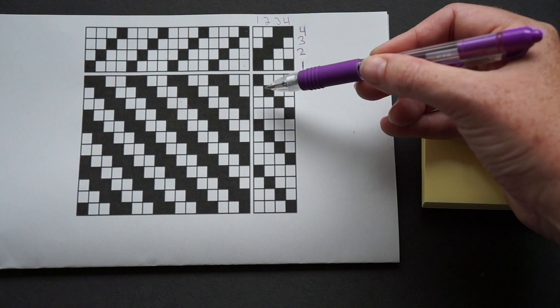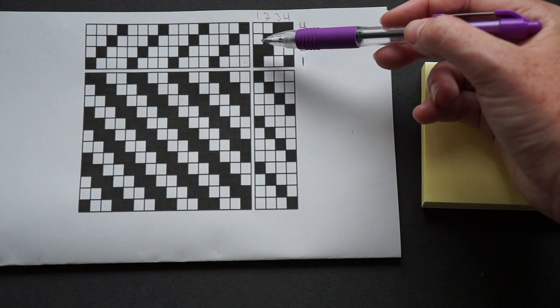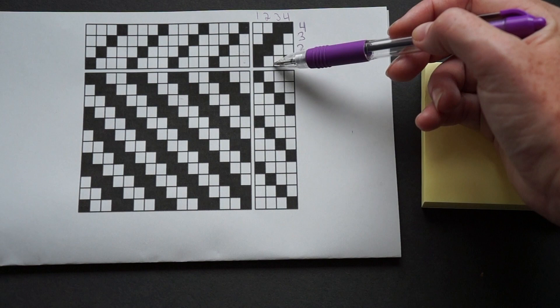This over here, these are your weft threads. So this is what you're going to put through your warp threads to create this pattern. This box is traditionally used for people that have foot treadles. So as you're setting up your treadles, you would do... This would be your first treadle, second treadle, third treadle, fourth treadle.